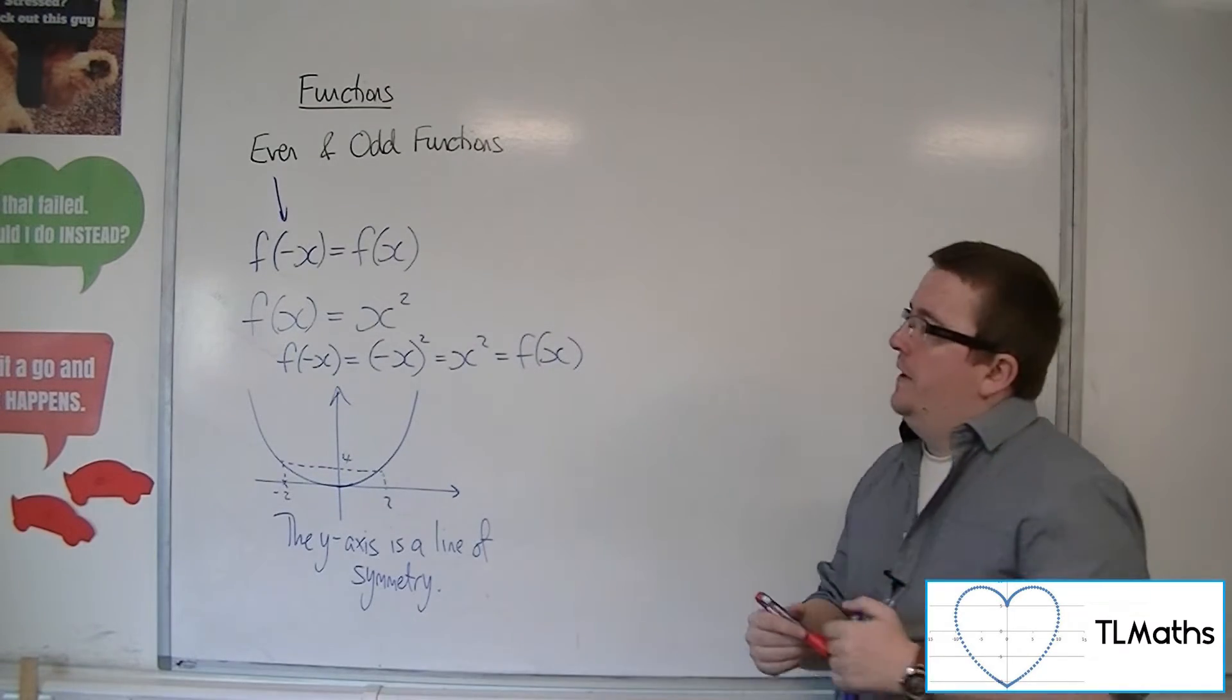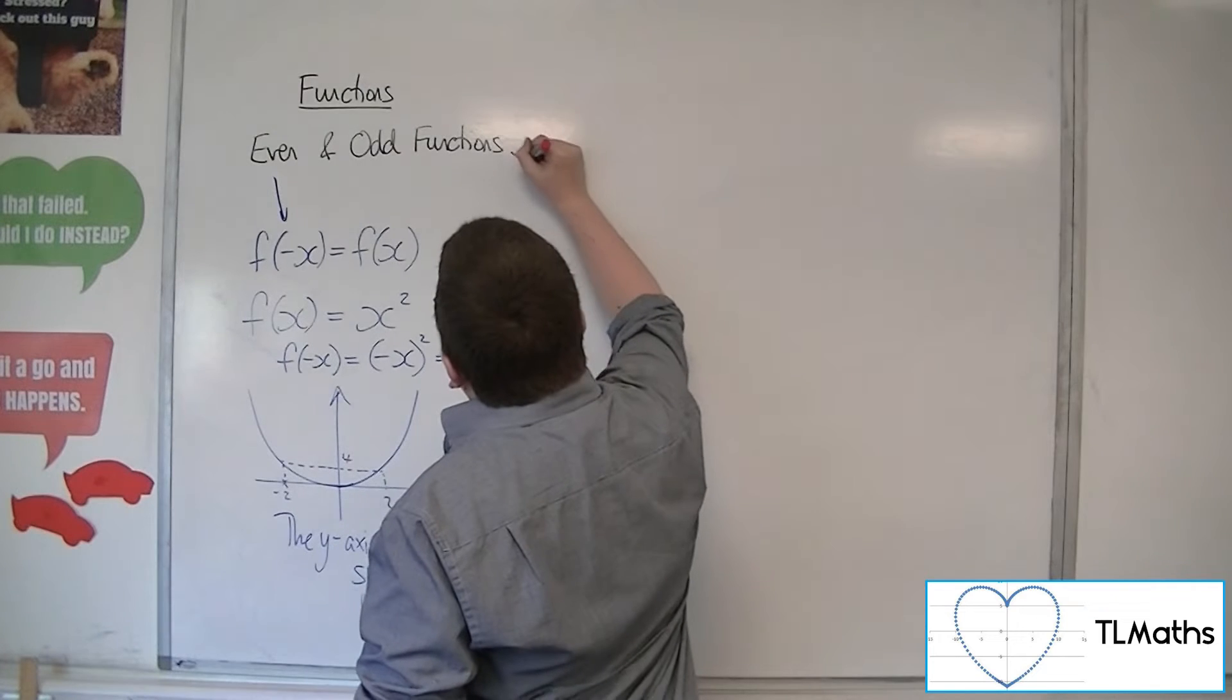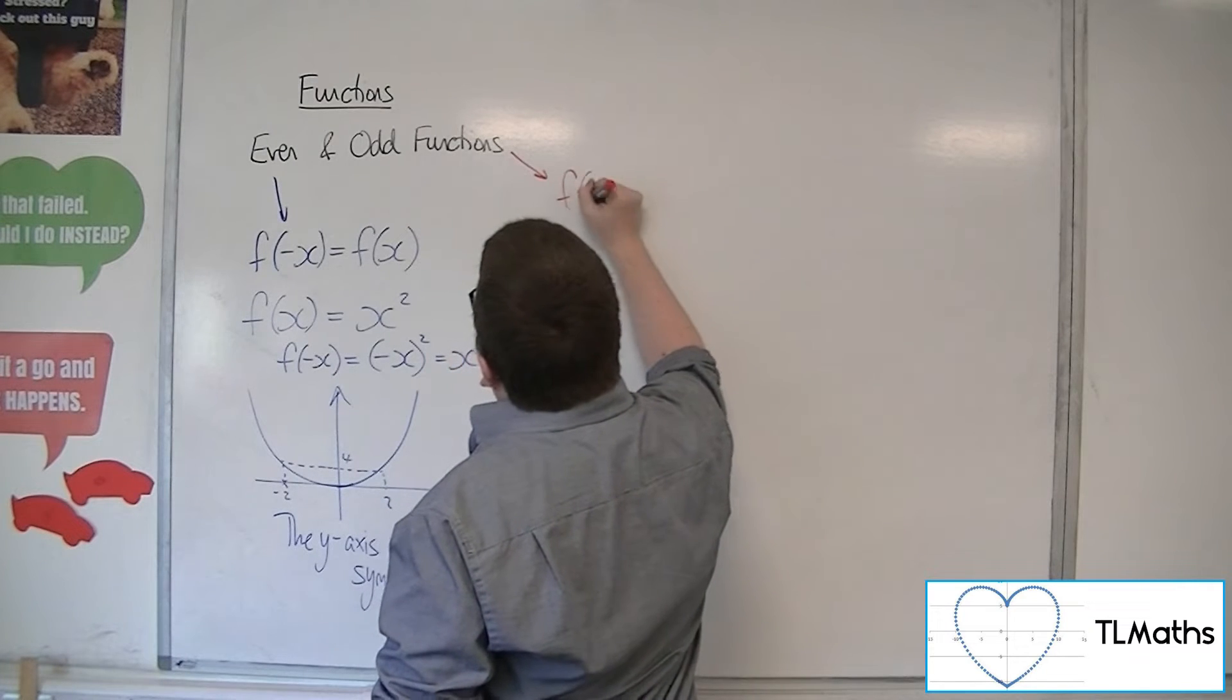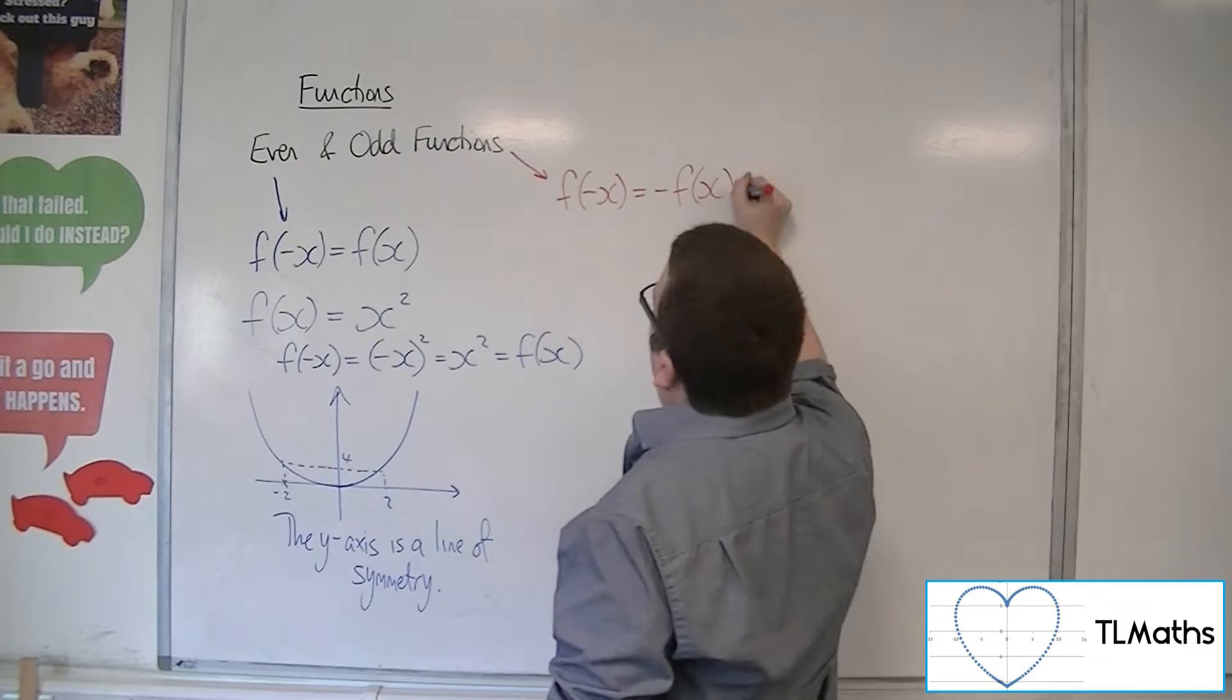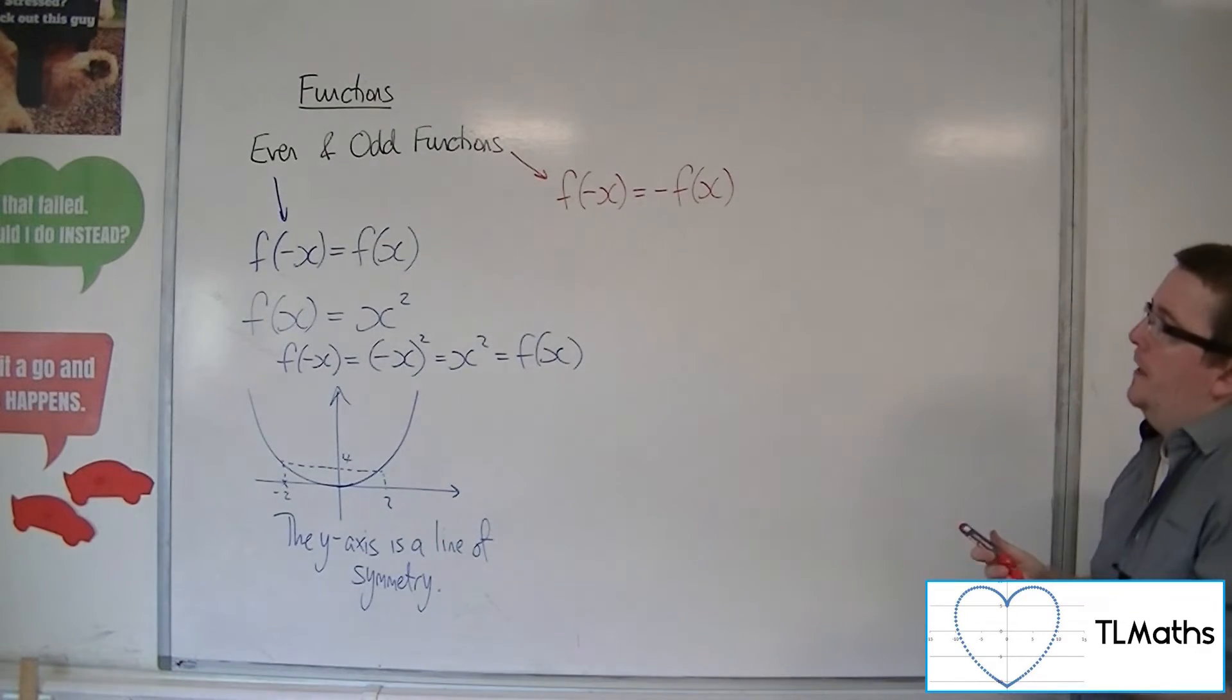Odd functions, on the other hand, have the property that f of minus x is the same as minus f of x.